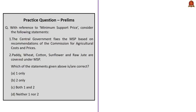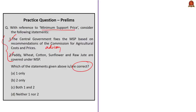Another prelims question on minimum support price: Statement 1 — the central government fixes MSP based on recommendations of CACP — is correct, though note that these recommendations are only advisory and the central government can increase or decrease the prices. Statement 2 — paddy, wheat, cotton, sunflower and raw jute are covered under MSP — is also correct. The correct answer is option C: both 1 and 2.